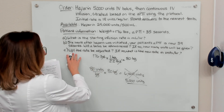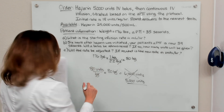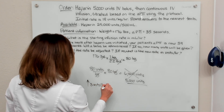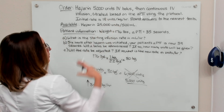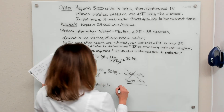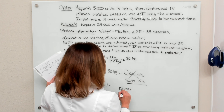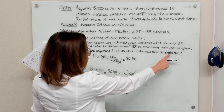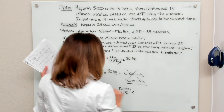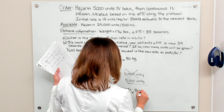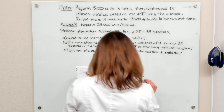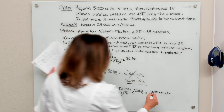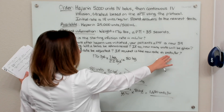For part C, the rate will be adjusted. According to the protocol, we need to increase the rate by 3 units per kilogram per hour. Our initial rate was 18 units per kilogram per hour, so the new rate is 21 units per kilogram per hour. Multiplying by the patient's weight of 80 kilograms gives a new rate of 1,680 units per hour.